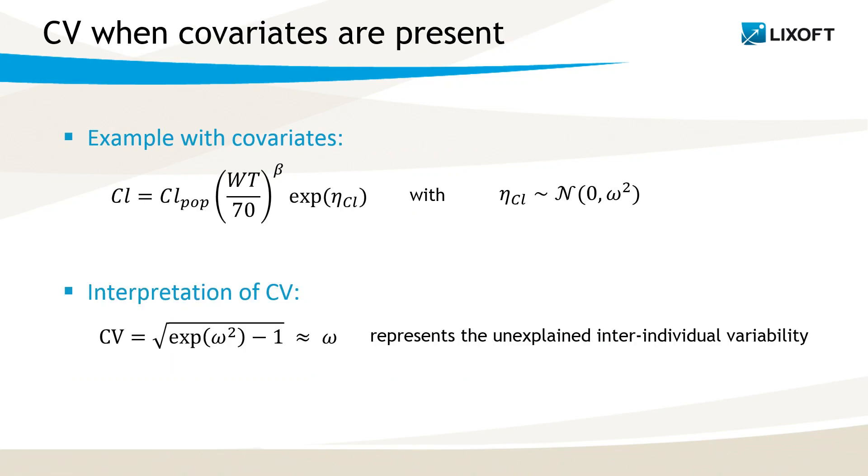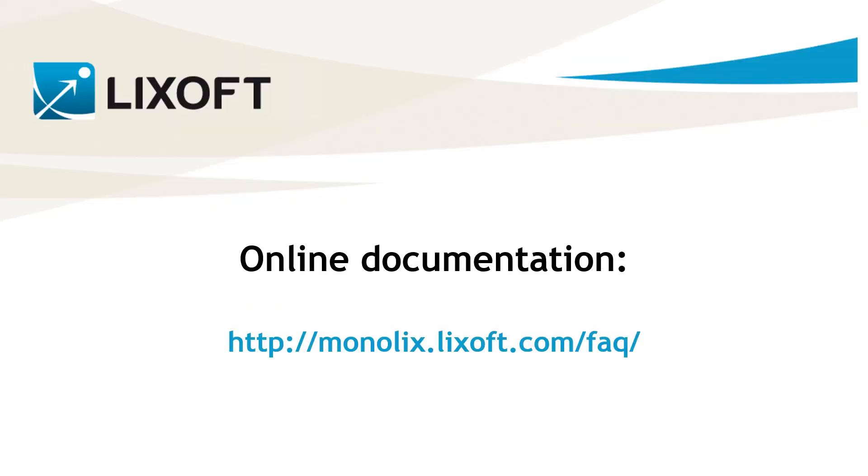And to finish, note that when covariates are present, as in these examples for instance, and one calculates the coefficient of variation with the following formula, then the coefficient of variation represents only the unexplained inter-individual variability. That's it about the coefficient of variation. Have a nice week!